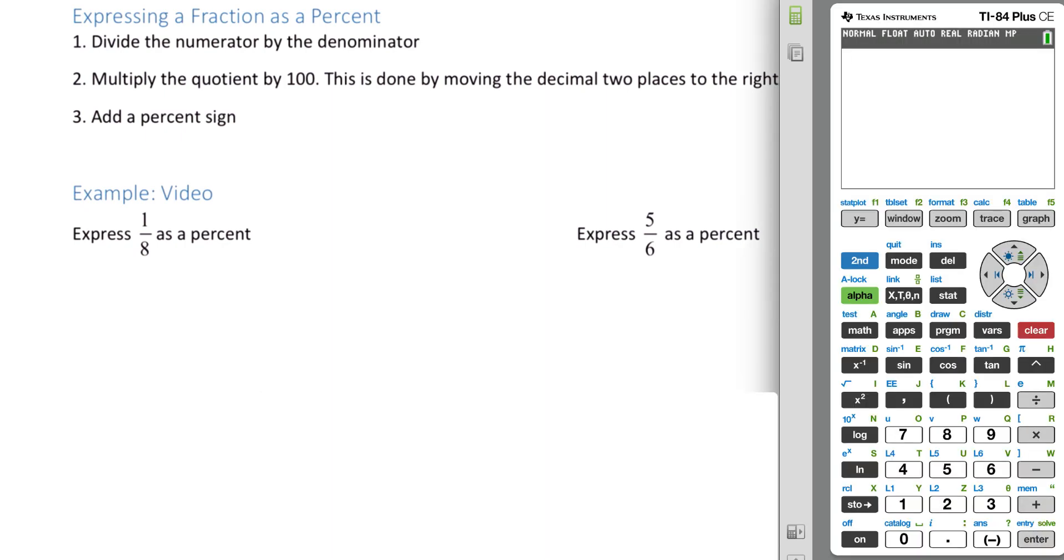For example, we want to write 1/8 as a percent. We're going to take 1, divide it by 8, and get a decimal: 0.125.